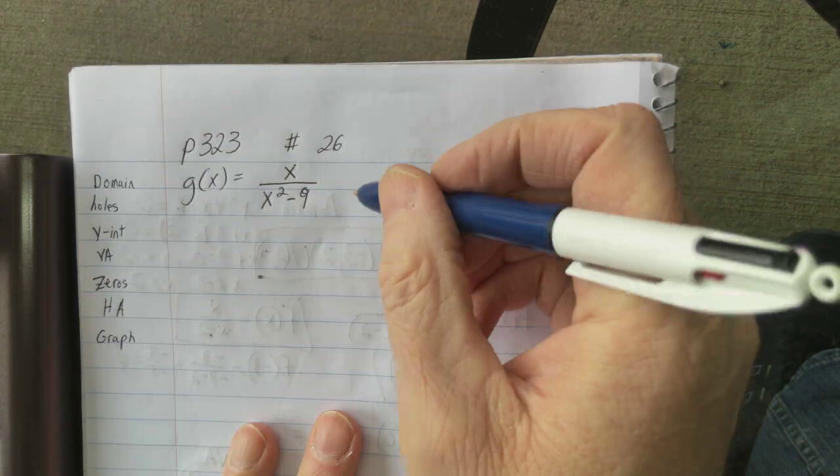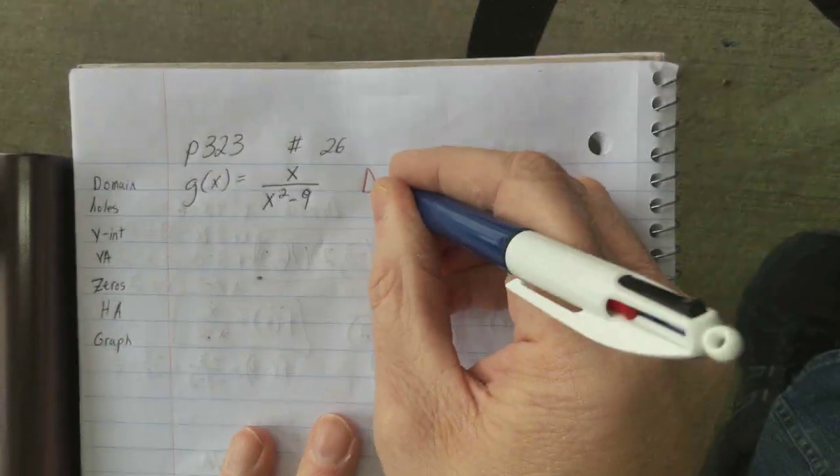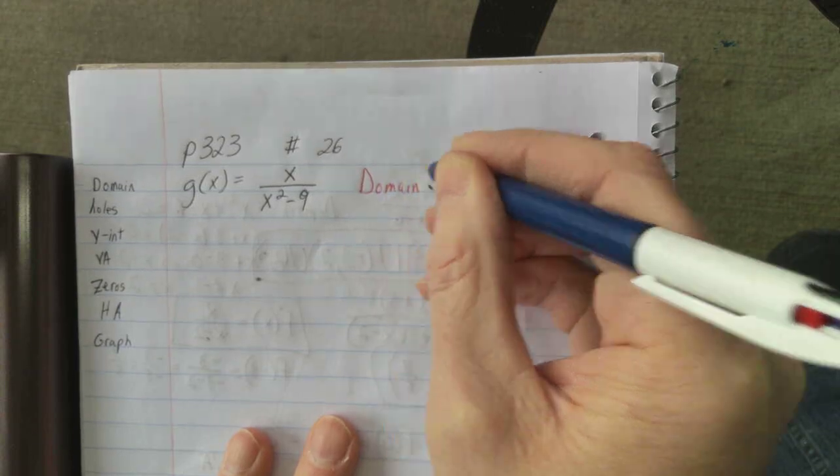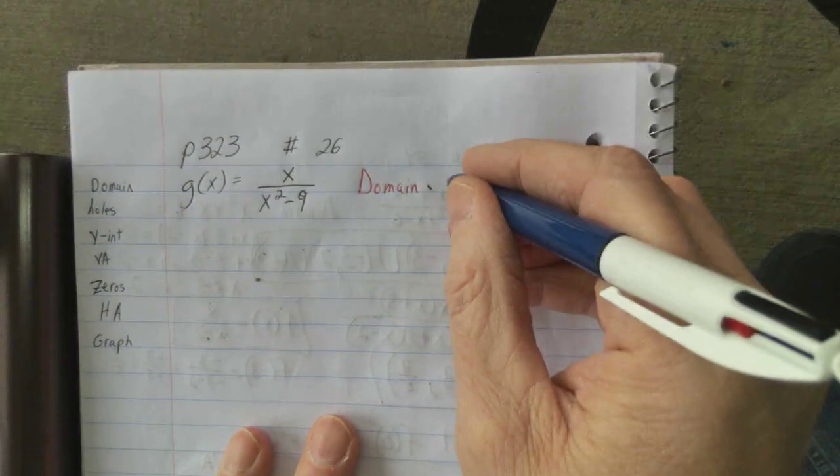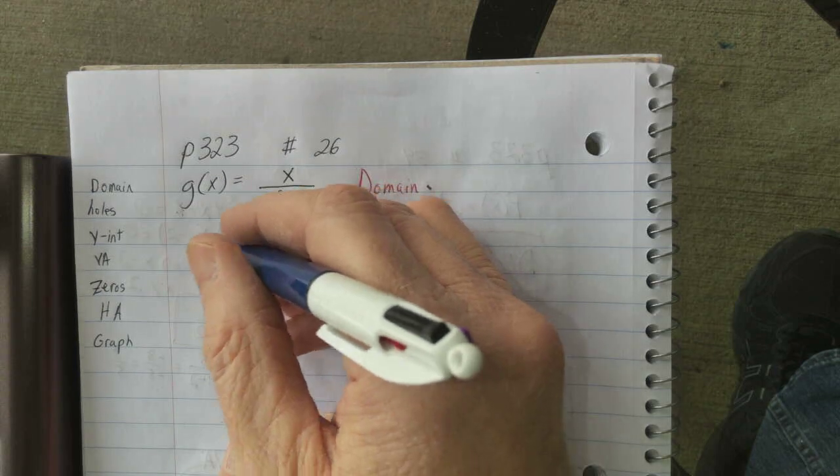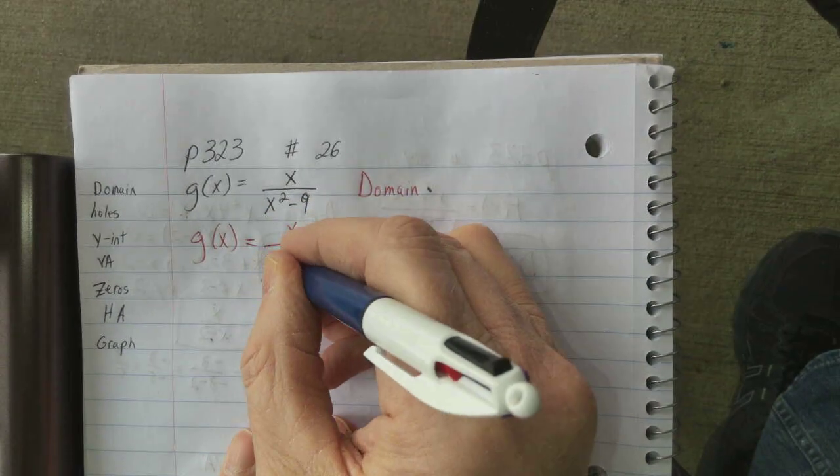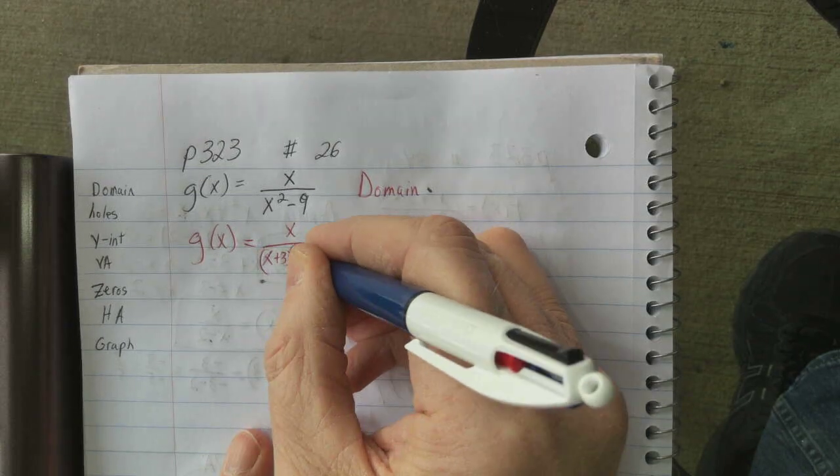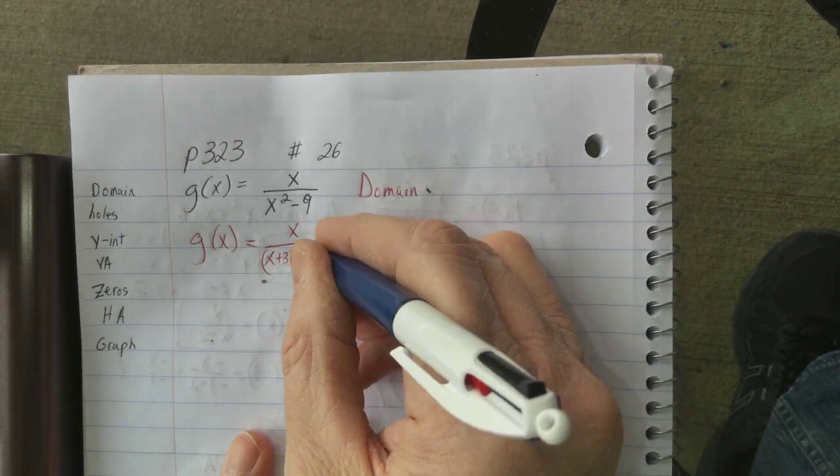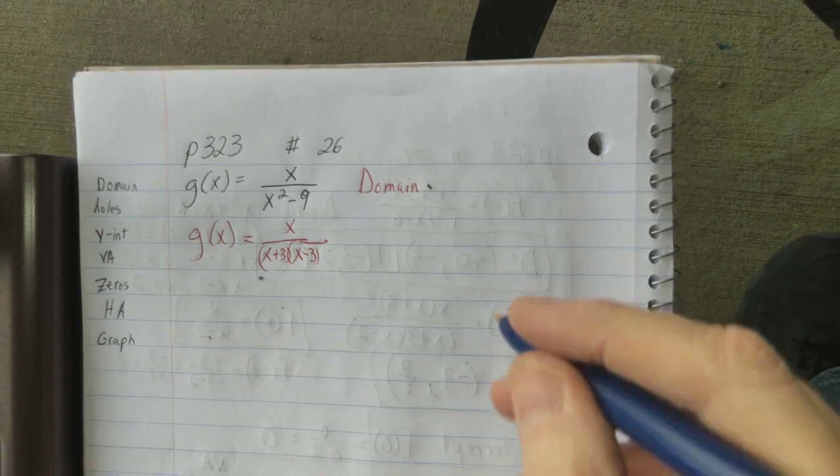I just want to go through everything and g of x equals x over x squared minus 9. I'm going to rewrite g of x equals x over x plus 3 times x minus 3. There's no canceling that's going to happen here.